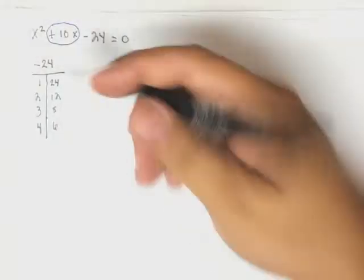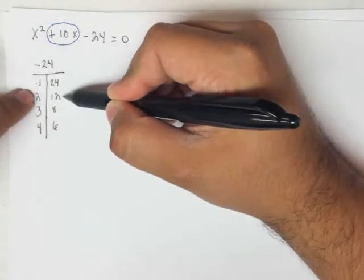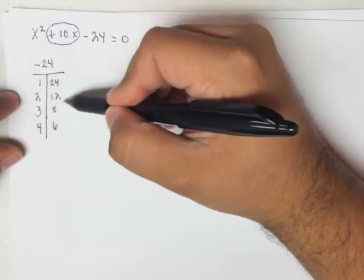So, let's see. This right here has a difference of 23, difference of 10, difference of 5, difference of 2. So this right here is what I want.